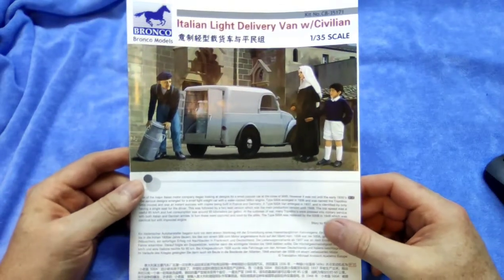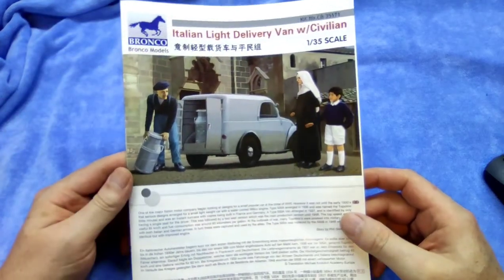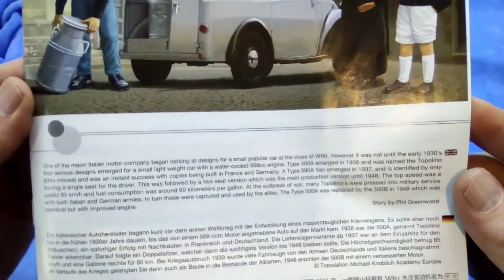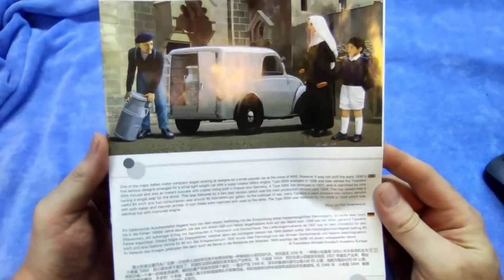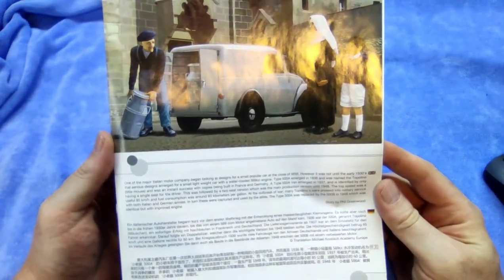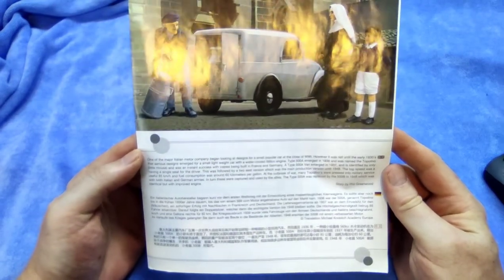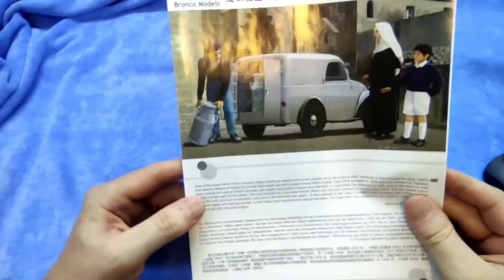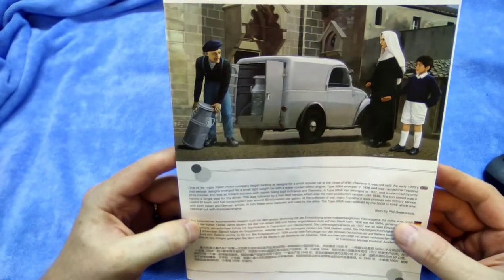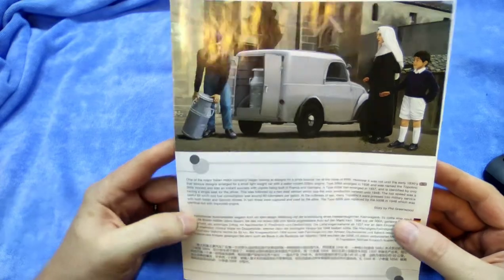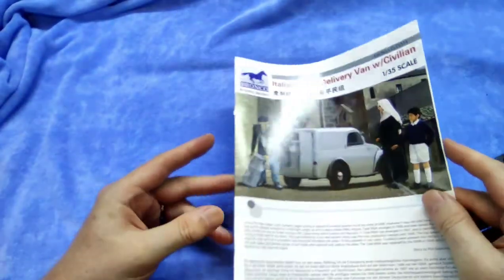Then obviously comes with an instruction sheet which we have right over here. It gives you one of the major Italian engines. They never call it Fiat, but it is a 569 engine, and it is obviously the Topolino. It's 1948, so it's probably just after the war where you would find a scene like this.